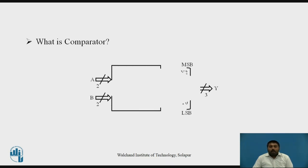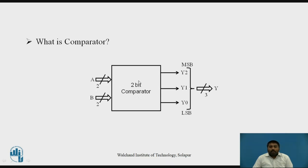This is the comparator — a 2-bit comparator having two inputs, A and B. Each one is 2-bit, and it gives you the output, which is collectively called Y, a 3-bit signal. It has 3 bits: Y[0], Y[1], and Y[2]. Depending on the input conditions, any one of these bits is going to be 1 — when A equals B, A greater than B, or A less than B.